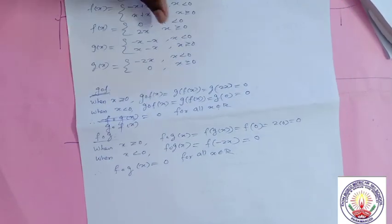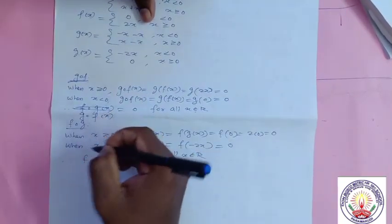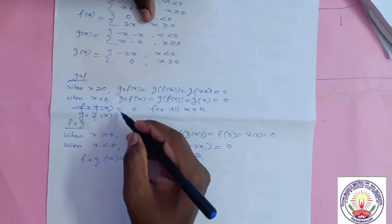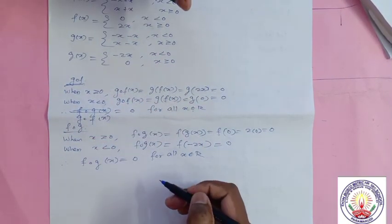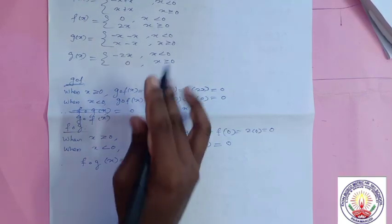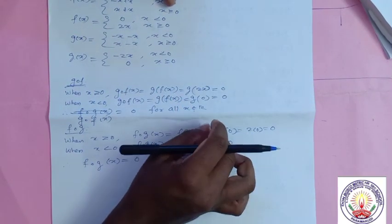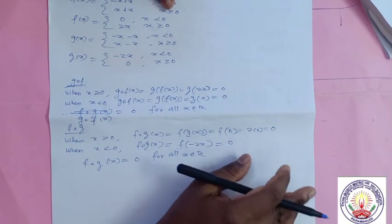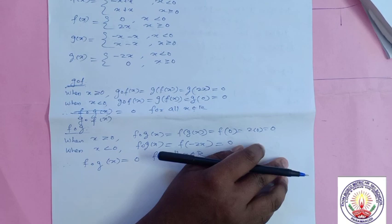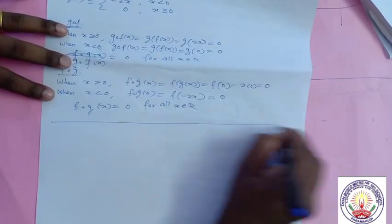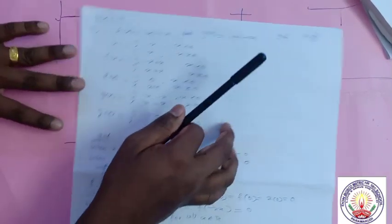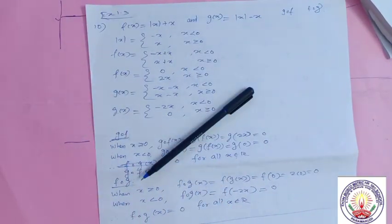So both answers equal 0. That means in this problem, f∘g is also equal to g∘f. But in general, f∘g and g∘f may not be equal, because composition of functions is not commutative in general. Work it out, and if you don't understand, just ask. Thank you.